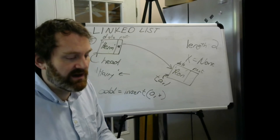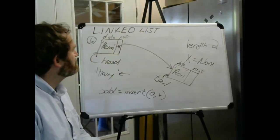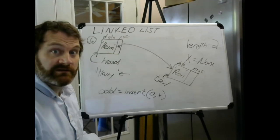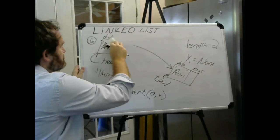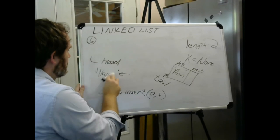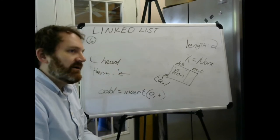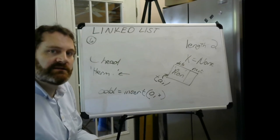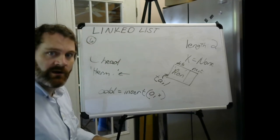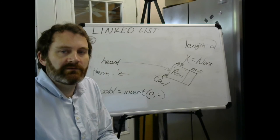Step six: list.pop(0). The item at index zero is Hermione. We remove her node, which also removes her link to Ron. The head of a linked list must always point to the first node — so now we must update the head to point to Ron, who is now the first item. The length updates to one.